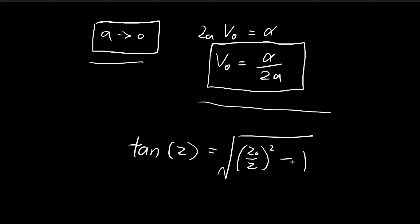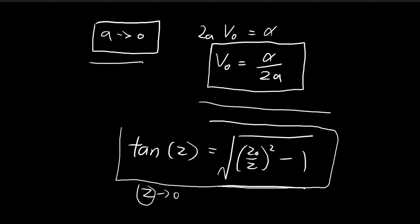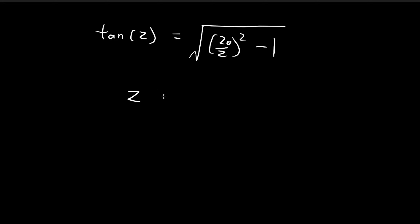Since Z0 → 0, the solutions Z to the energy equation also tend towards very small numbers. Graphically, the tangent Z curve intersects the other term at a point very close to 0. So we can approximate tan(Z) ≈ Z, ignoring higher-order terms. This gives Z equal to the expression on the right-hand side, so Z² = Z0²/Z² − 1.